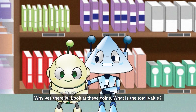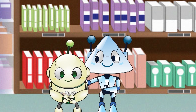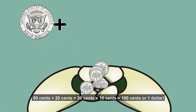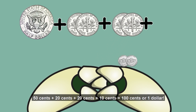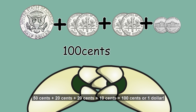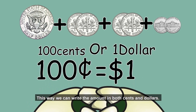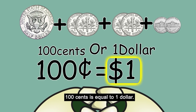Look at these coins. What is the total value? 50 cents plus 20 cents plus 20 cents plus 10 cents equals 100 cents, or one dollar. This way, we can write the amount in both cents and dollars. 100 cents is equal to one dollar.